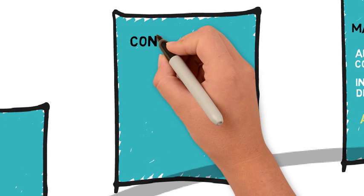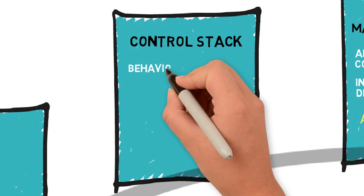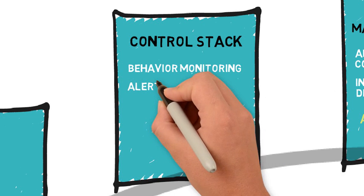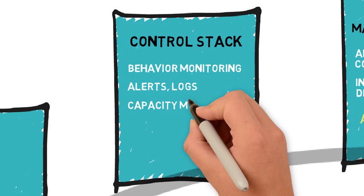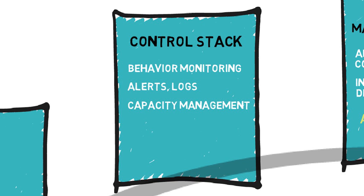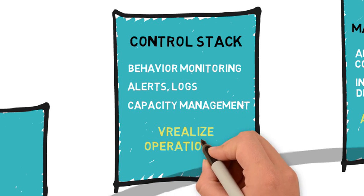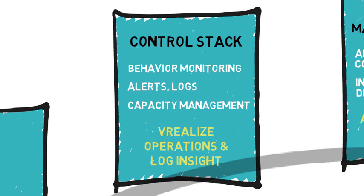The control stack comes next, and is used for application and infrastructure behavior monitoring, alerting, dashboards, logging, and capacity management throughout the release process and into production. You can use the vRealize suite at this stage, including vRealize Operations and vRealize Log Insight.